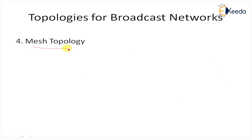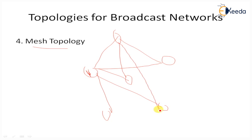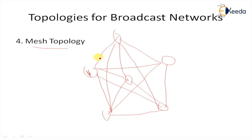Next is mesh topology, where all nodes are connected together. For example, with five nodes, each single node is directly connected to every other node. This is the basic idea of mesh topology — arbitrary connections are formed between the nodes in the network, whether there are four, five, or ten nodes.